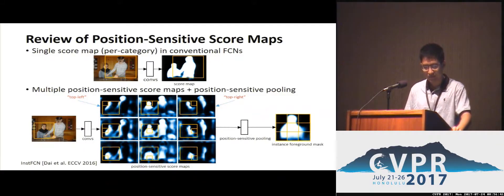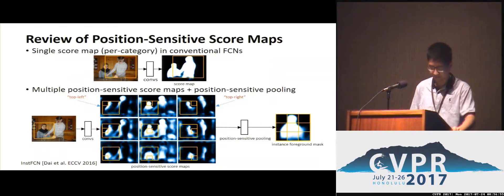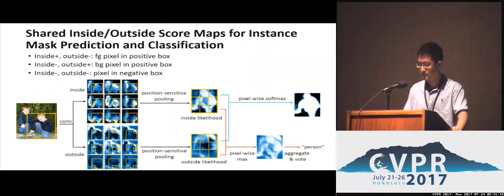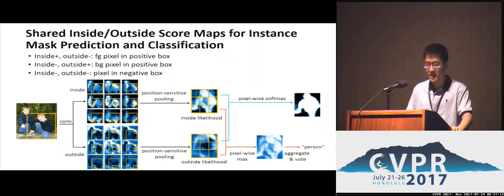Here we show another example of a predicted foreground mask of an instance object. In our method, different regions share the same set of score maps generated by fully convolutional layers. Thus, the per-region computation can be fully shared. With the predicted instance masks, we further need to classify them into different object categories. We enhance the position-sensitive score map idea to perform the mask prediction and classification subtasks jointly and simultaneously. The same set of score maps are shared for the two subtasks, as well as the underlying convolutional representation.